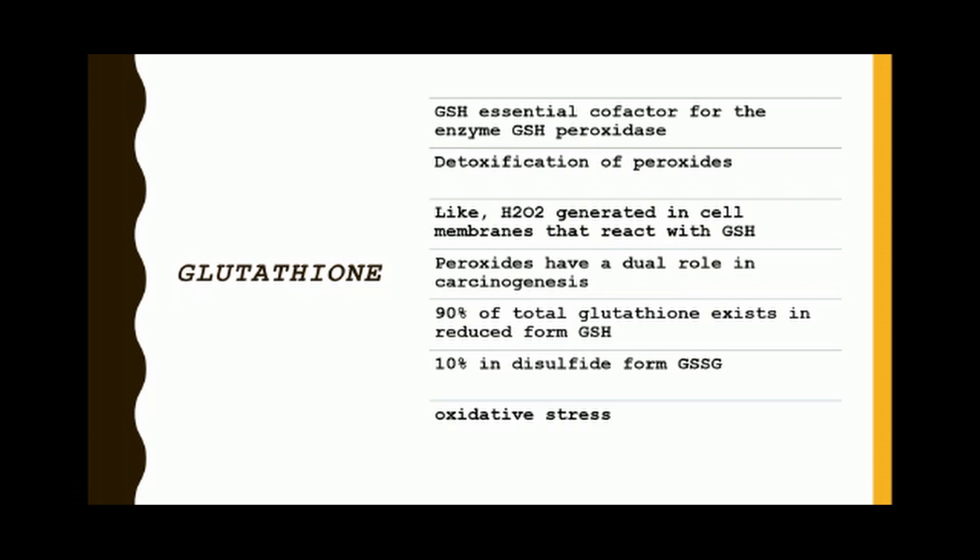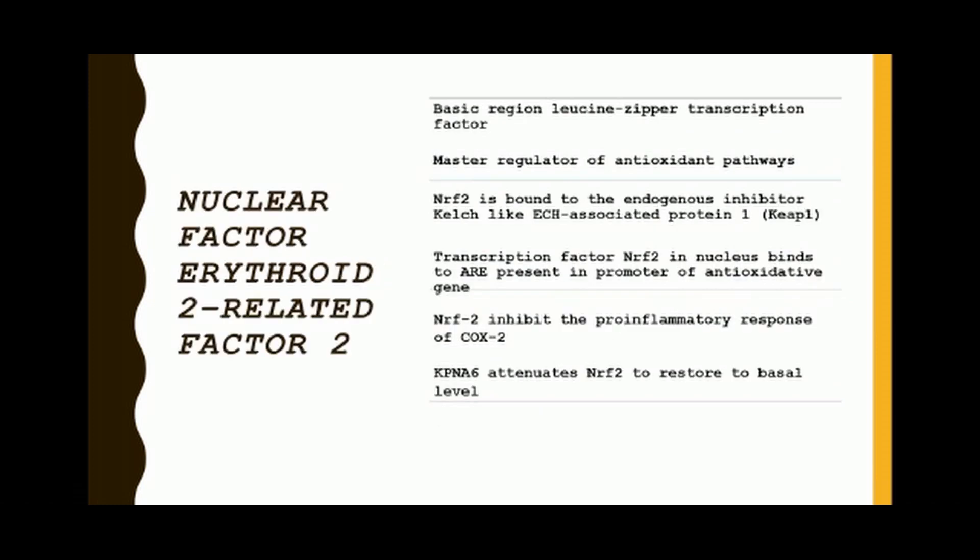A change in the GSH/GSSG ratio is an indicator of oxidative stress. The next factor is nuclear factor erythroid 2-related factor 2, NRF2. It is a basic region leucine zipper transcription factor and one of the most important master regulators of the antioxidant pathway. In normal conditions, NRF2 is bound to its endogenous inhibitor KEAP1, a cytosolic protein that inhibits NRF2 signaling by promoting NRF2 degradation through the proteasomal pathway.